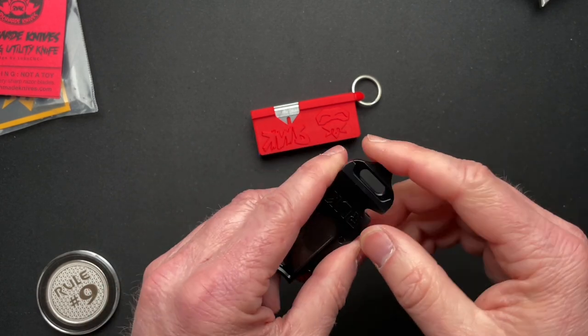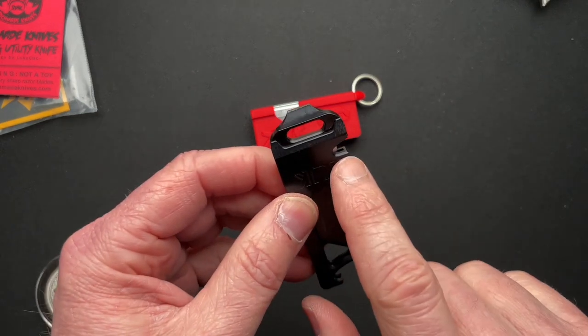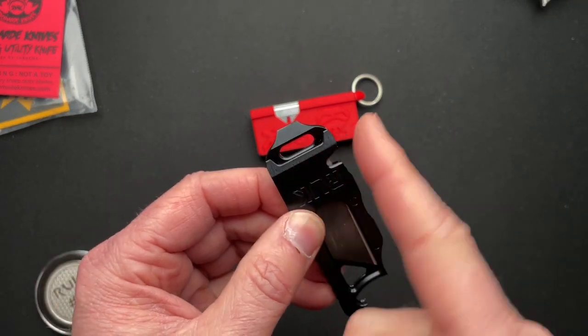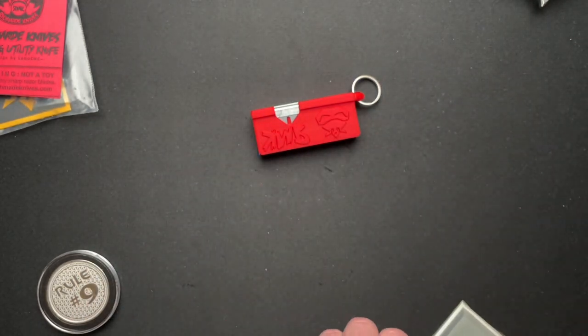There's a pry bar or a scraper here on this end. That does have a cutter here because the blade protrudes through there for cutting wire or rope or something. So that is an option.